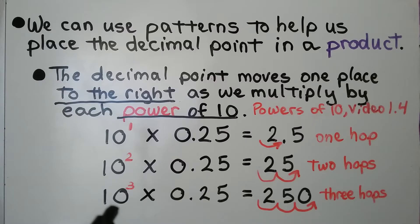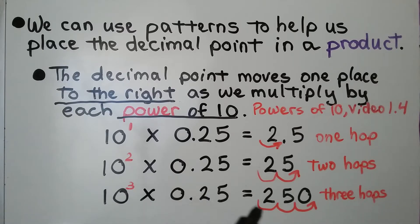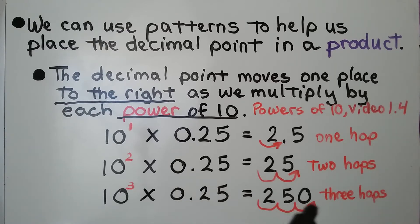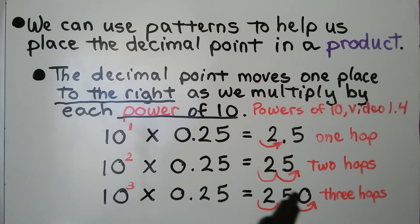If we have 10 to the third power times 25 hundredths, the decimal point is going to move 3 hops. It's right here, and it's going to go 1, 2, 3. It's going to end up on the other side over here. We'll add a 0 as a placeholder in the ones place.